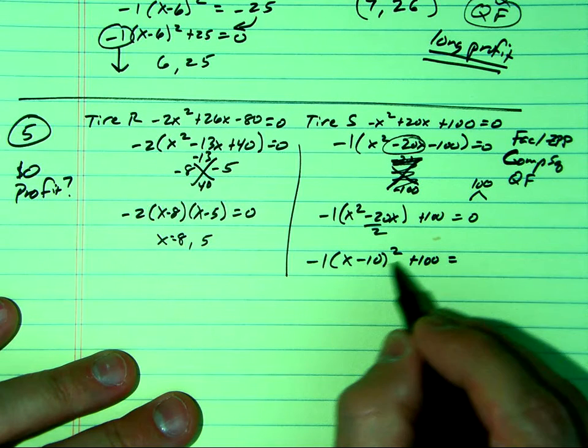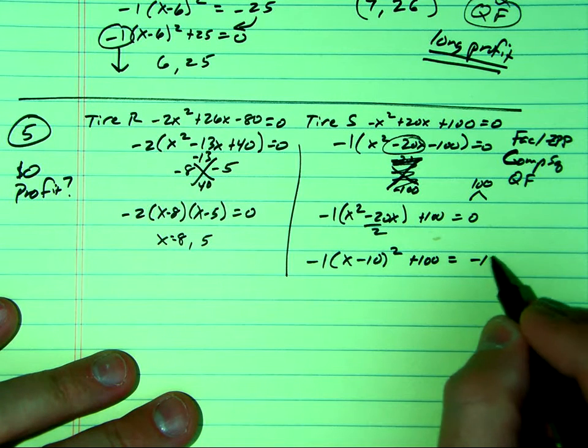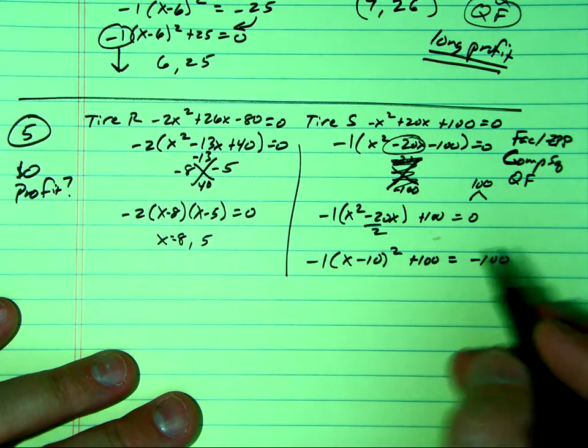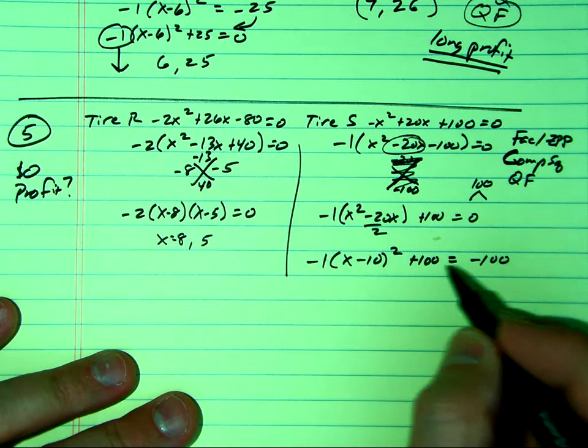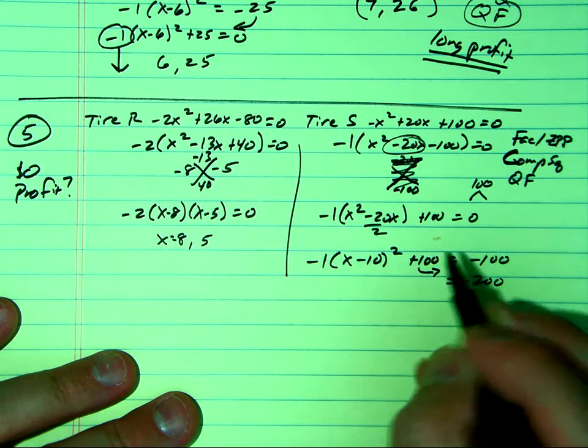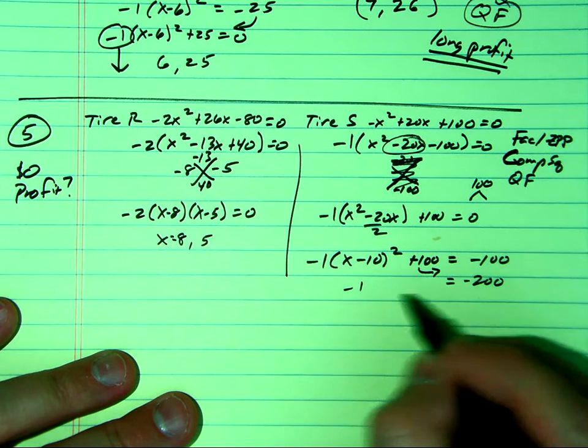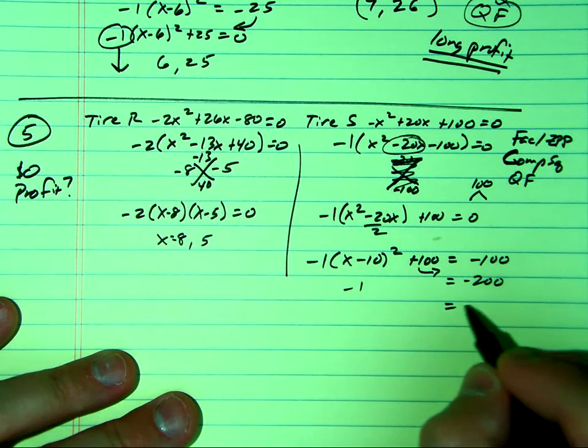Am I adding 100 to this? No, I'm adding a negative 100. I'm still trying to solve for this, so it's equal to negative 200. I'm going to bring that to that side. Divide by that negative 1 equals 200.